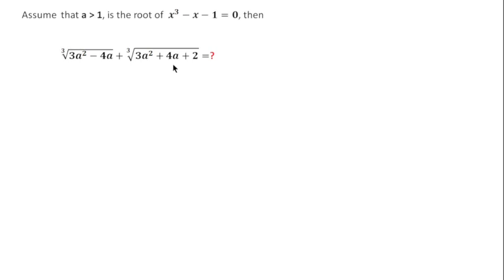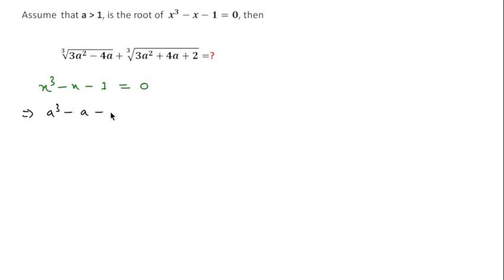So how can we solve this question? To solve it, I will first write the equation x² - x - 1 = 0. Since a is the root, we can write a² - a - 1 = 0, which means a² = a + 1.